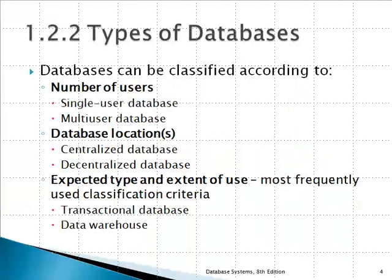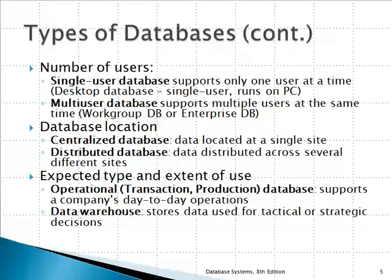Databases can be classified based on various criteria: the number of users allowed to access the database at the same time, the location where data is stored, and the expected type and extent of use. Based on the number of users, we have single-user databases and multi-user databases. A single-user database supports only one user at a given time and is also called a desktop database. A multi-user database supports multiple users accessing the database simultaneously. If fewer than 50 users have access, it is a workgroup database.